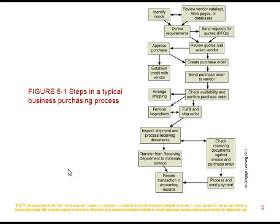Here are the steps in a business purchasing process: Identify needs. Research the web, catalogs, and databases. Define your requirements. Then get requests for quotes, review those quotes, and select a vendor. It goes through an approval process, and if approved, you create a purchase order and send it to the vendor. Then arrange for shipping and perform inspections on the goods or services delivered. The accounting department checks receiving documents against invoice and purchase orders, processes and sends payment, and the whole transaction is recorded in the accounting records.